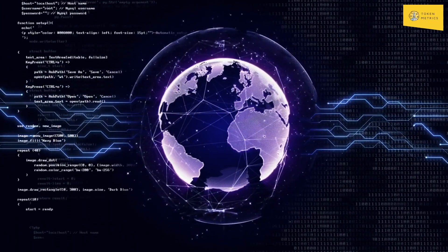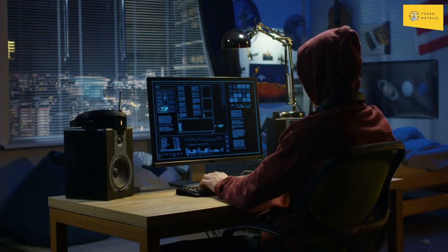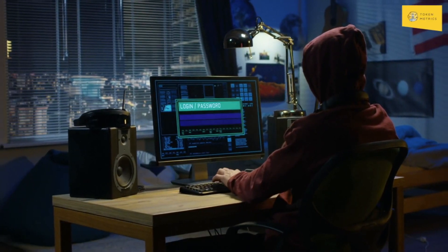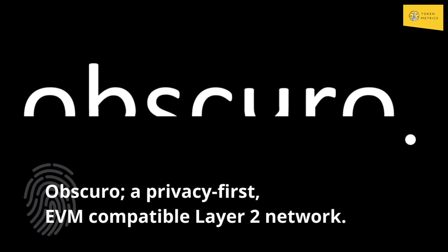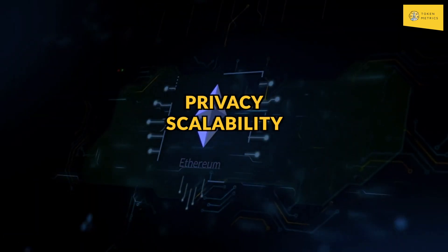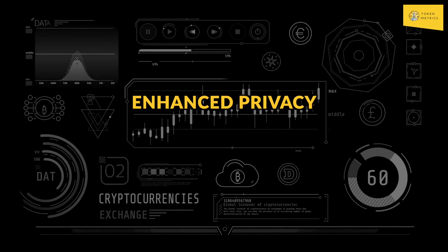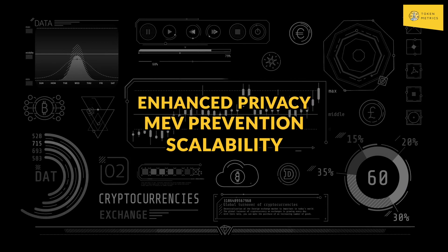The project also needs to address potential vulnerabilities in its technological components to ensure security and mitigate cybersecurity risks. In conclusion, Obscuro is a remarkable Ethereum L2 solution that focuses on privacy, scalability, and compatibility with the Ethereum ecosystem. Its key highlights — enhanced privacy, MEV prevention, scalability, and reduced gas fees — make it a promising opportunity for developers and users alike.